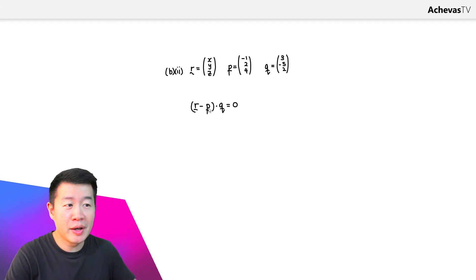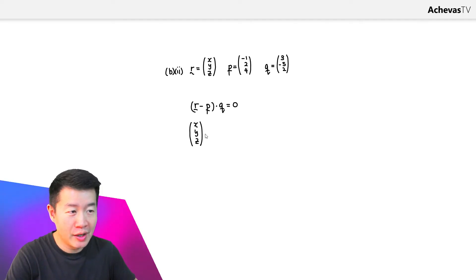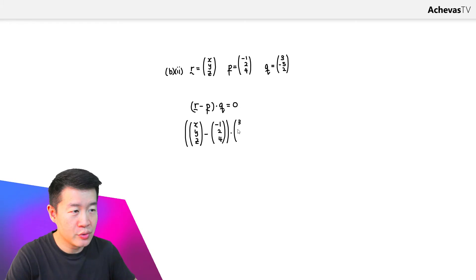We are given r minus p dot q is equal to zero, where r is the variable point with coordinates (x, y, z). The position vector of point P is (-1, 2, 4), and vector q — the position vector of point Q — is (3, -5, 2). So we have the vector (x minus minus 1, y minus 2, z minus 4) dotted with (3, -5, 2) equals zero.